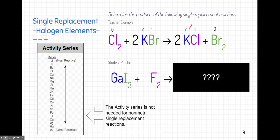Chlorine's predictable charge is negative 1, so potassium and chlorine easily pair in a one-to-one relationship forming potassium chloride. Bromine goes off by itself, but since bromine is diatomic, we write a subscript of 2. Then we balance the reaction using coefficients.